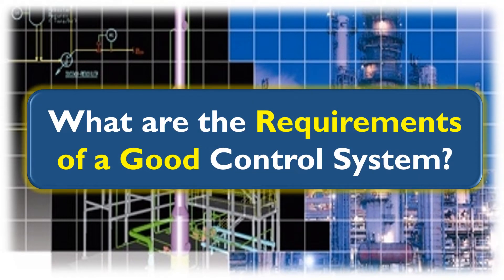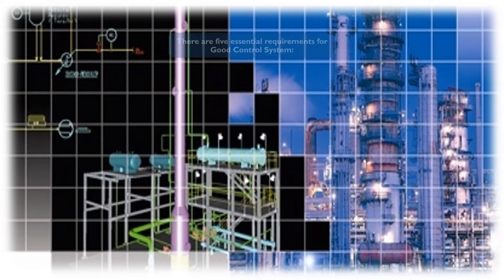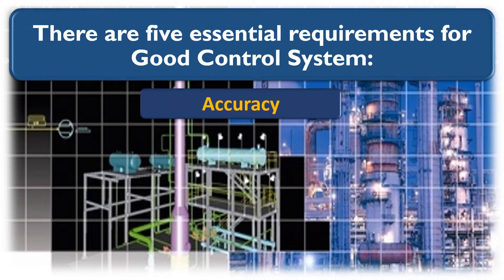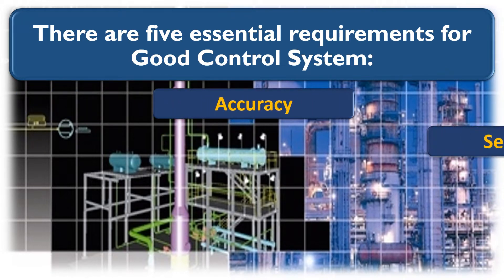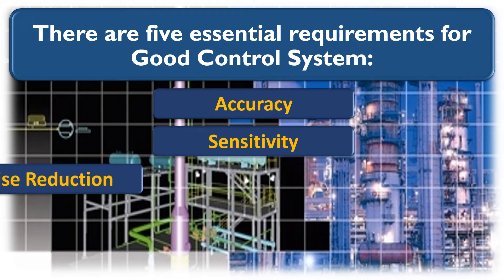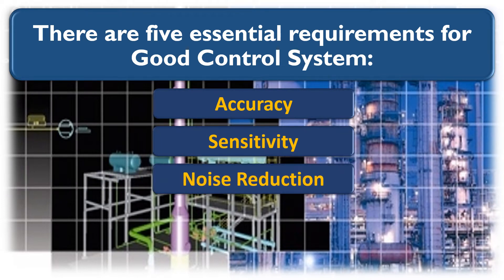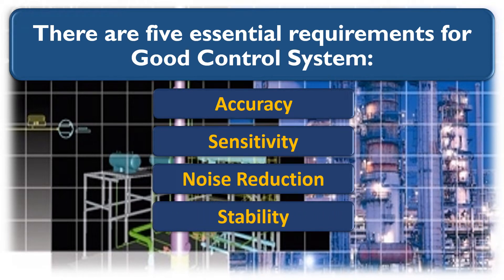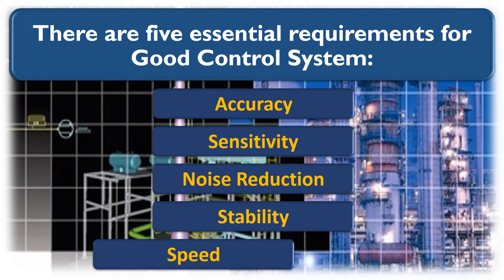What are the requirements of a good control system? There are five essential requirements for a good control system. First requirement is accuracy. Second requirement is sensitivity. Third requirement is noise reduction. Fourth requirement is stability. Fifth requirement is speed.